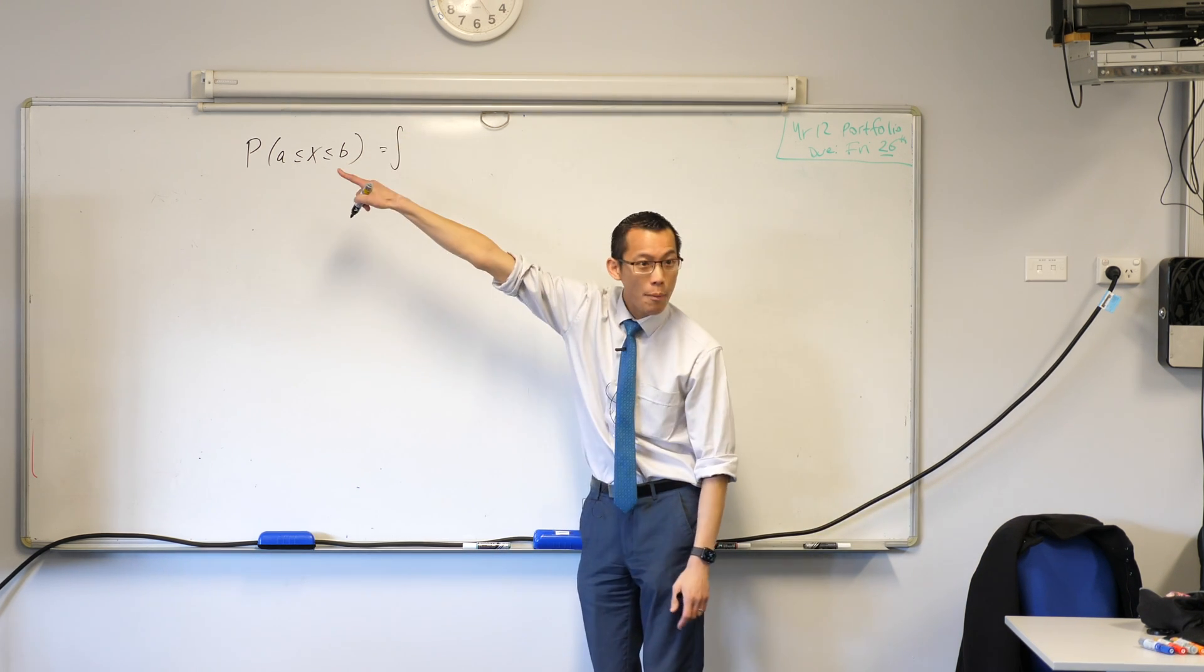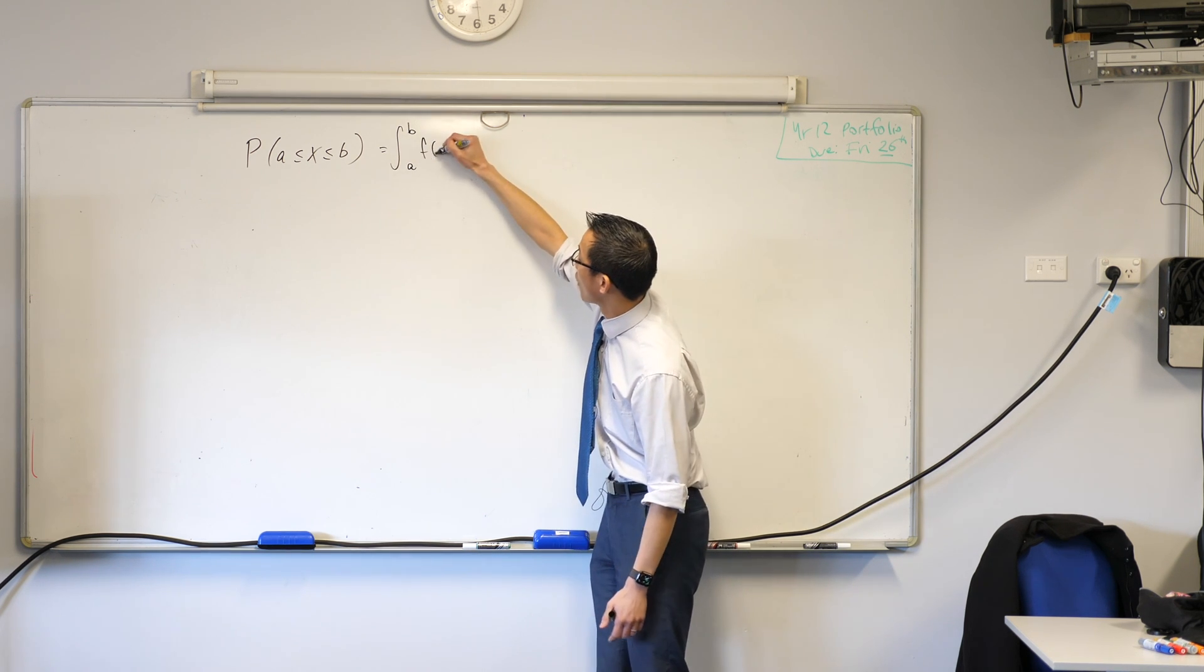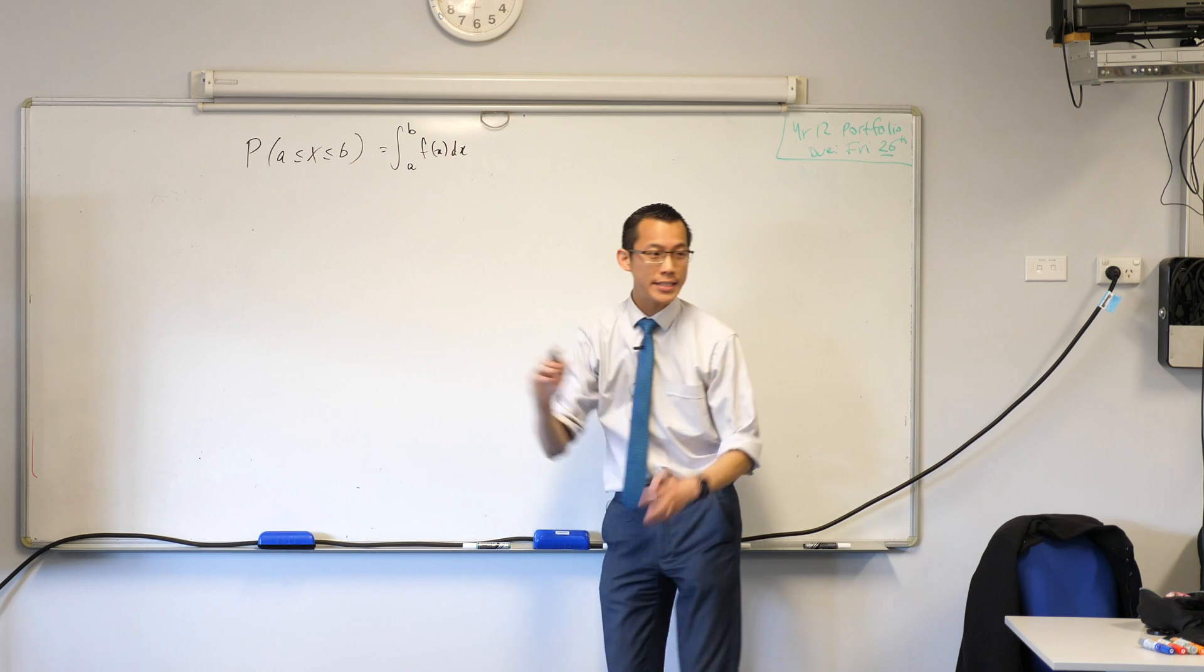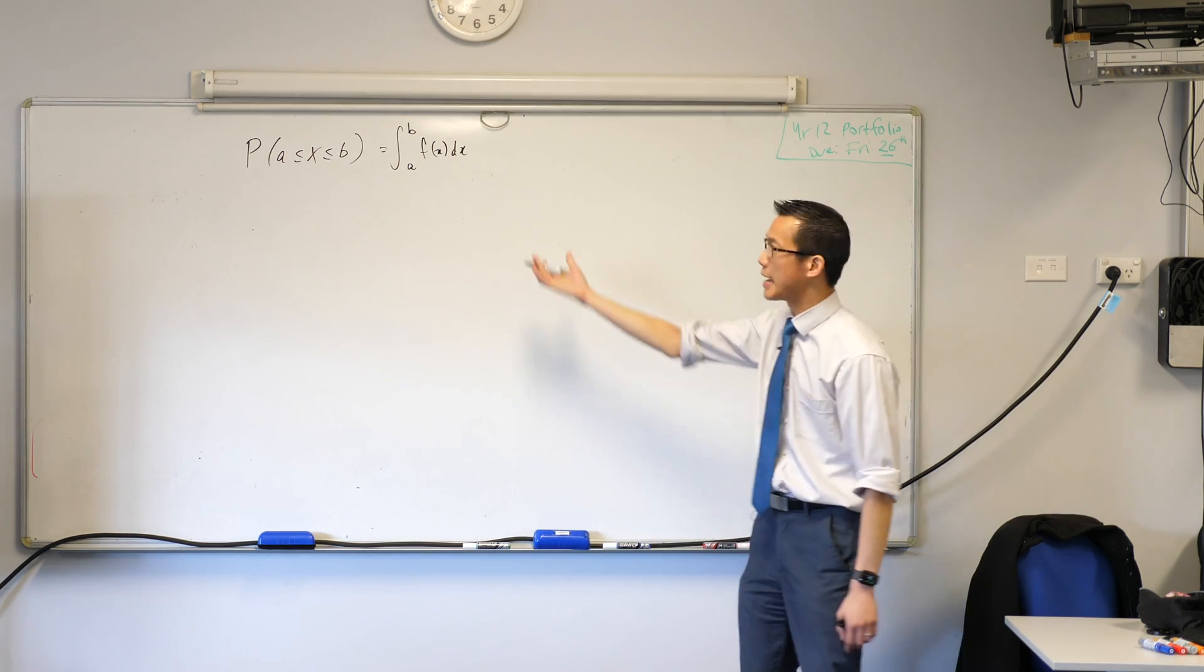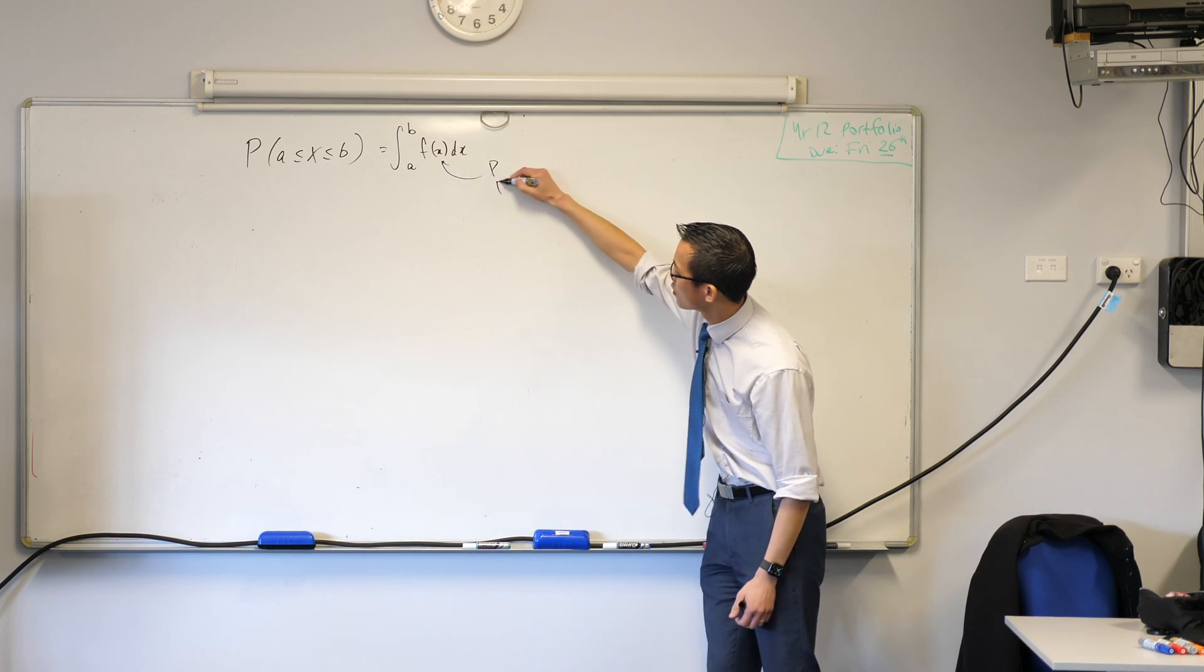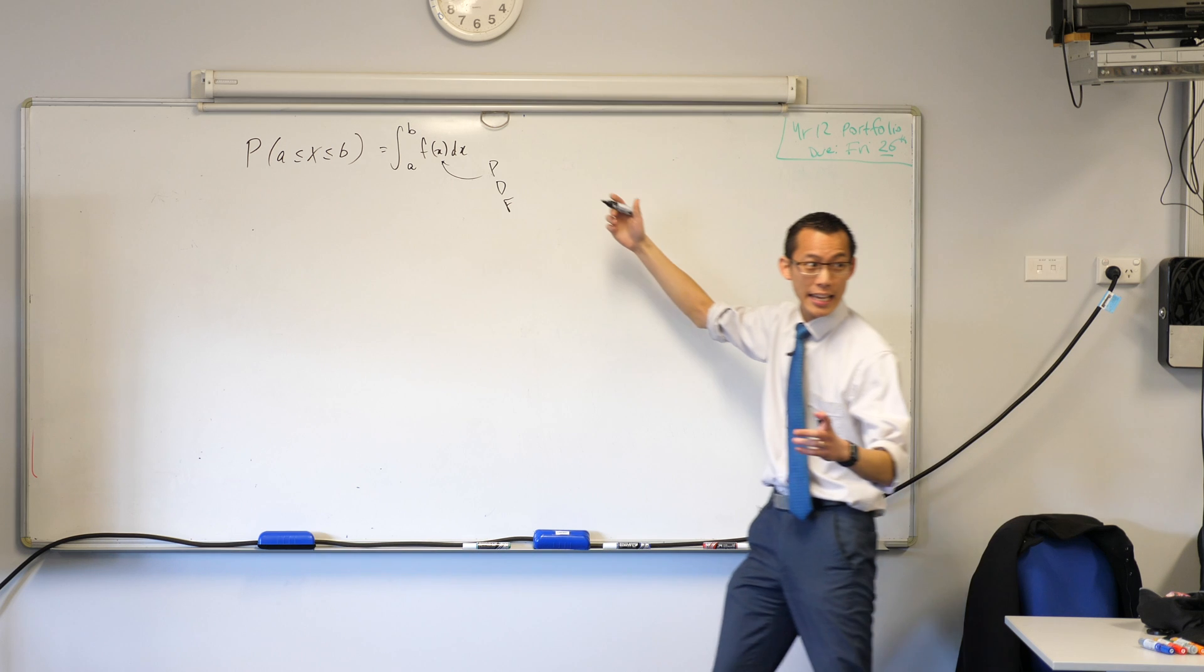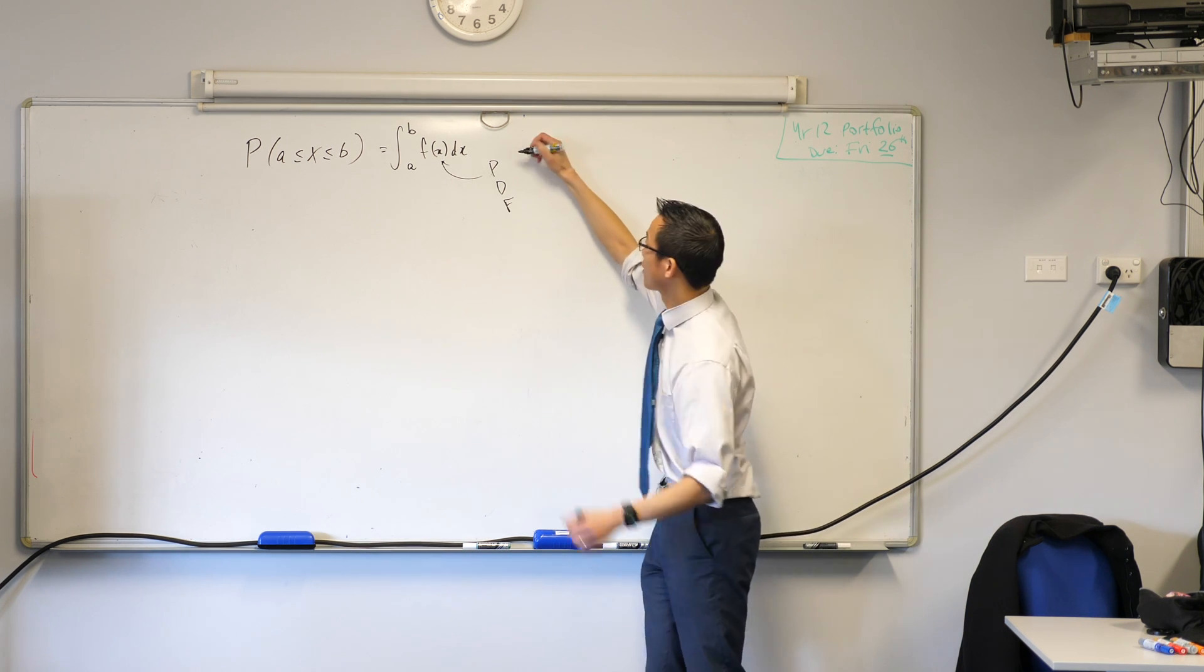So I'm going to integrate from my lower boundary A to my upper boundary B, and then off you go. But what we did say was not just anything can be f of x. By the way what we gave a special name which starts with p, d, and f, what do we call f of x? Do you remember? A probability density function. Very good.